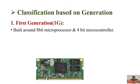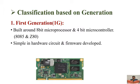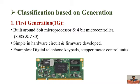First generation embedded systems are built around 8-bit microprocessors and 4-bit microcontrollers. The 8085 is considered an 8-bit microprocessor, and Z80 is considered a 4-bit microcontroller. The hardware circuits used are very simple and the software used is also very simple. Examples of first generation embedded systems are digital telephone keypads and stepper motor control units.